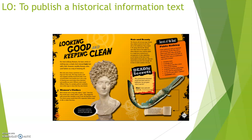Let's look at some of the features we need to include when we publish our work today. First of all, there's a title — it says 'Looking Good and Keeping Clean.' It's a really interesting title that tells the audience what this section is going to be about. If you look at it though, it's not just the same font as all the rest of it — they made it exciting different colors, slanted it, changed the size of certain things, and it's all in capitals. It draws you in as the audience. So today, think about how you can make your titles more exciting.